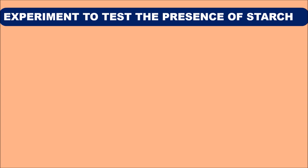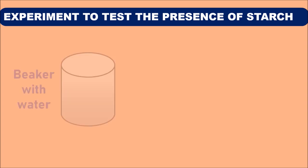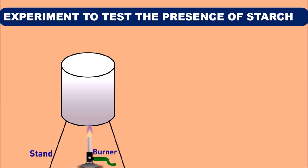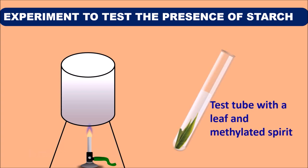Take a beaker with water, place it on a stand, and boil the water with the help of a burner. Now take a test tube, fill it with methylated spirit, and immerse a leaf inside the methylated spirit. Place this test tube in the water bath.